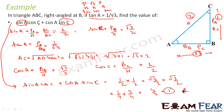So our answer is 1. To summarize: since two angles A and C were involved, we found perpendicular and base for each angle separately. We were told tan A equals 1 by root 3, so we found all three sides. Once we had the sides, we found sin A, sin C, cos A, cos C, substituted the values, and got the answer.